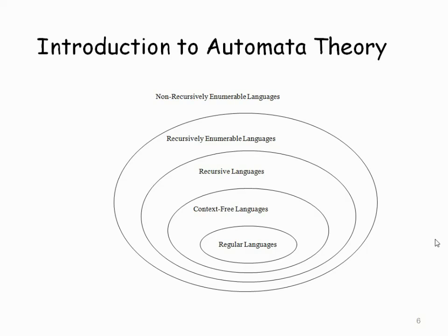What are context-free and recursive languages? Just take C programming — you might have written recursive functions. A simple factorial program: long int fact(int n) — if n equals 0, return 1; else return n into fact(n-1). This is a recursive language — calling a function itself until an exit condition is reached. For every opening parenthesis there should be a closing parenthesis — that is recursive in nature.